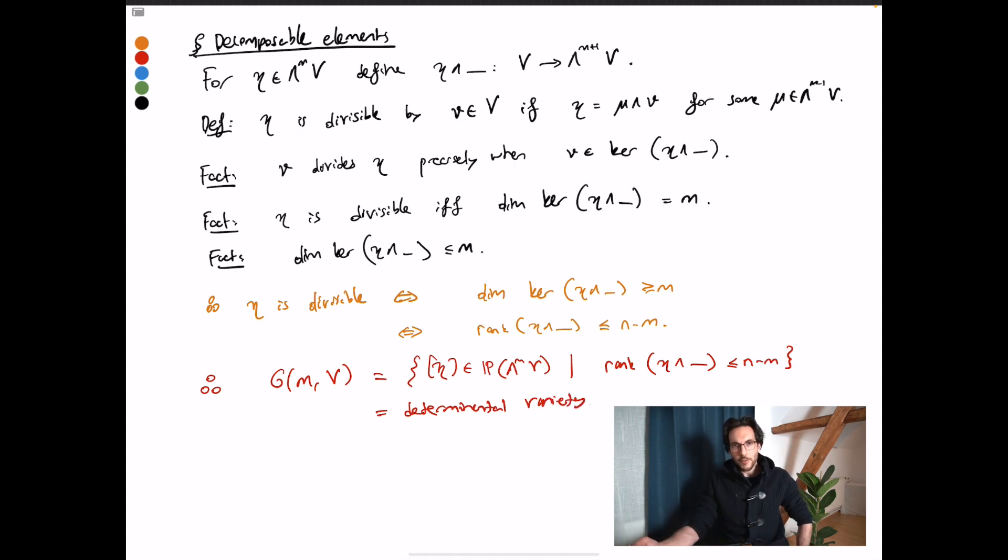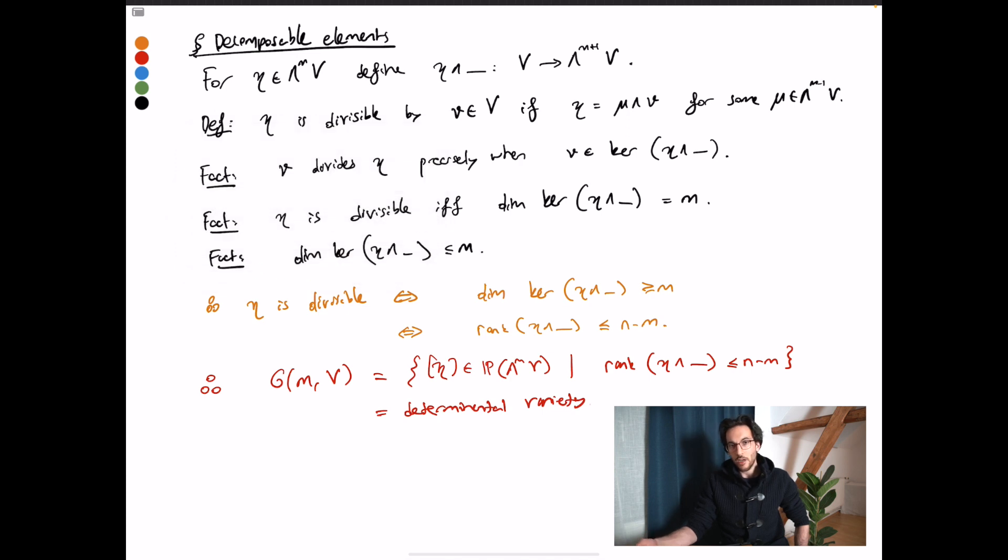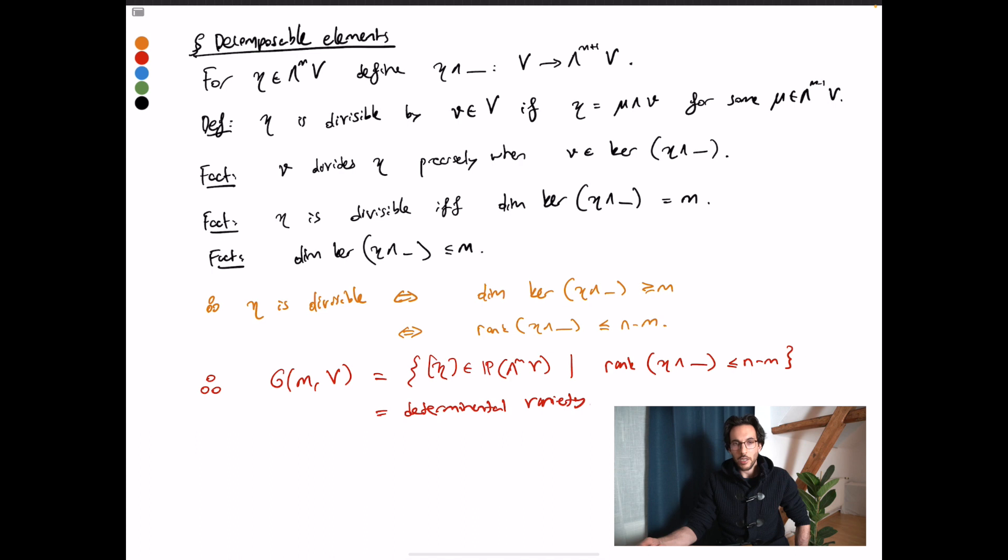So subvarieties of a projective space that can be expressed in terms of some rank conditions are called determinantal varieties. They have more structure than an arbitrary subvariety. In this case we see that the Grassmannian is a determinantal variety because we've expressed it using a rank condition. The bad thing about these rank conditions is that the minors will have high degree, and these are actually not the best equations that cut out the Grassmannian because it turns out that the Grassmannian can be defined by quadratic equations, so equations of degree two, of course degree much less than n minus m plus one.